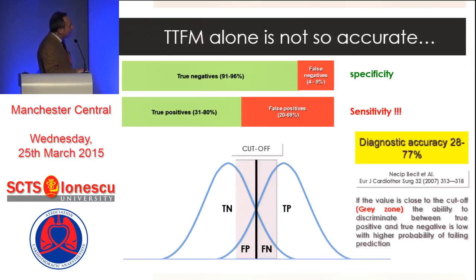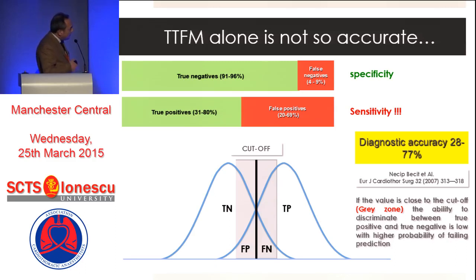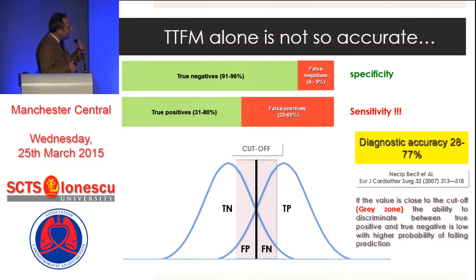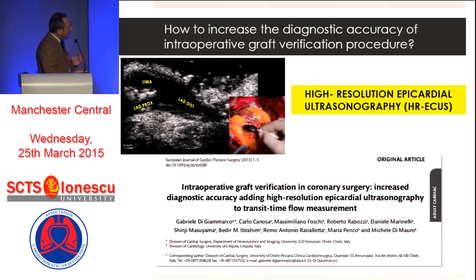What is the meaning of a cutoff value? Going back to the literature, we find that transit time flow measurement has good specificity but a significant lack of sensitivity when used alone. Statistically, the cutoff values create a blind area around the same value, meaning there is a wide area of uncertain prediction of graft fate. A value of 50 or 20 milliliters per minute is not a fixed border — if it is 19, the graft may be patent; if it is 21, it may not be. There is an unpredictable zone, which is why the diagnostic accuracy of the method alone is not sufficiently high.